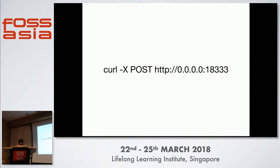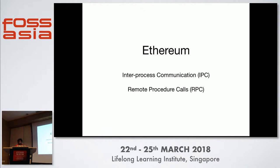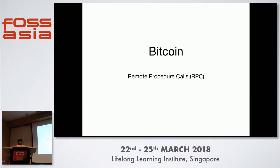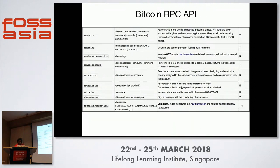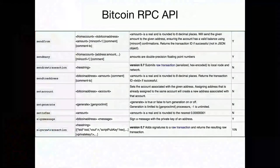After that, connecting to these RPC APIs is as simple as running a curl command to a port on your localhost. Ethereum has both IPC (inter-process communication) and RPC (remote procedure call) APIs exposed. Bitcoin has only remote procedure calls. This is the Bitcoin RPC API documentation, and here is the Ethereum RPC API documentation — just go to those docs to see how these APIs work.